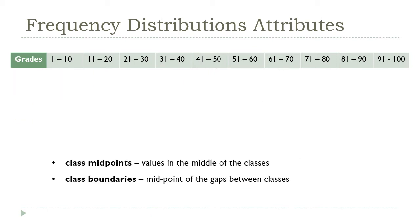So we've got two more definitions. First, the class midpoints are just the middle of each class. You can find these by simply averaging the upper and lower bounds. For example, the midpoint of the first class is the average of 10 and 1. That's 5.5. The second class is the average of 11 and 20. That's 15.5.